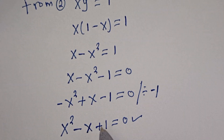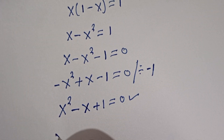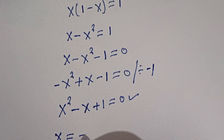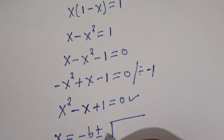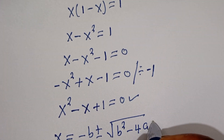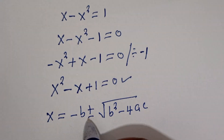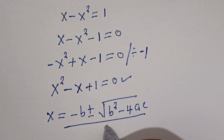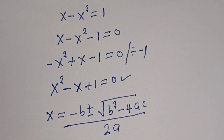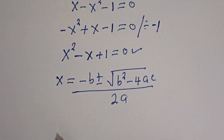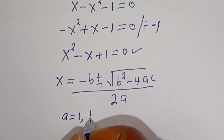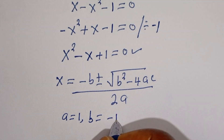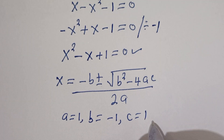Our quadratic general formula is given as x is equal to minus b plus or minus square root of b squared minus 4ac, all divided by 2a. From this equation, a is equal to 1, b is equal to minus 1, c is equal to 1.